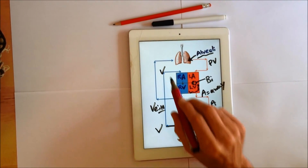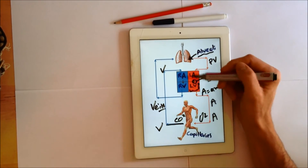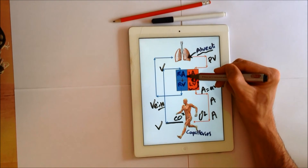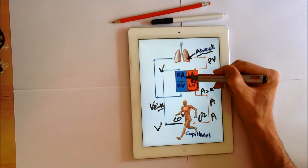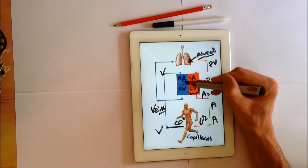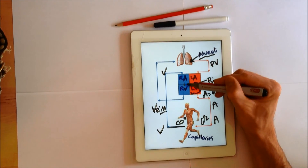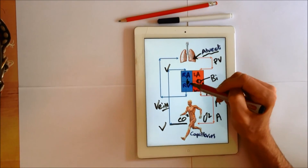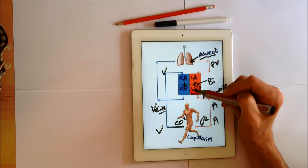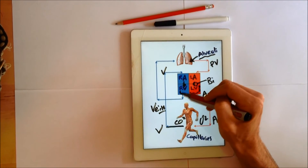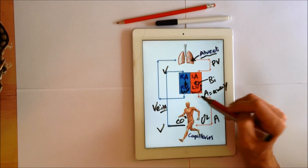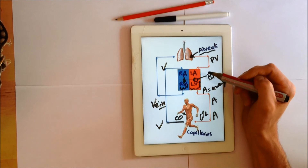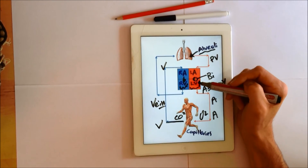Venules, veins, vena cava into the top right hand side of the heart — the right atria. This is a collecting chamber and blood will drop down into the right ventricle, which is a small muscular pump here, going back to the lungs with the deoxygenated blood.